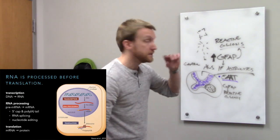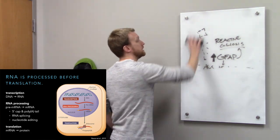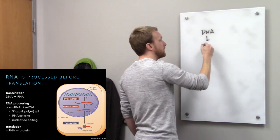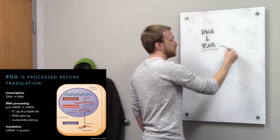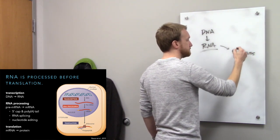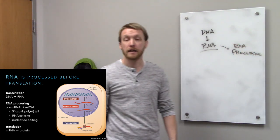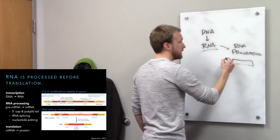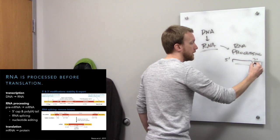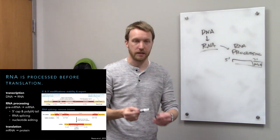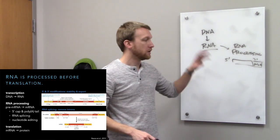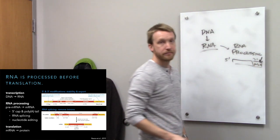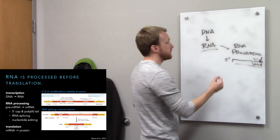A review of gene expression and the central dogma: we go from DNA to RNA to protein. Whenever we transcribe DNA into RNA, we don't make the final copy — we have to process that RNA. RNA processing involves adding a 5' cap and a 3' poly-A tail to increase stability. When the RNA is degraded, the first thing to go is just the useless poly-A tail, protecting the coding sequence. Stability is increased first, and then we need to cut out the introns.